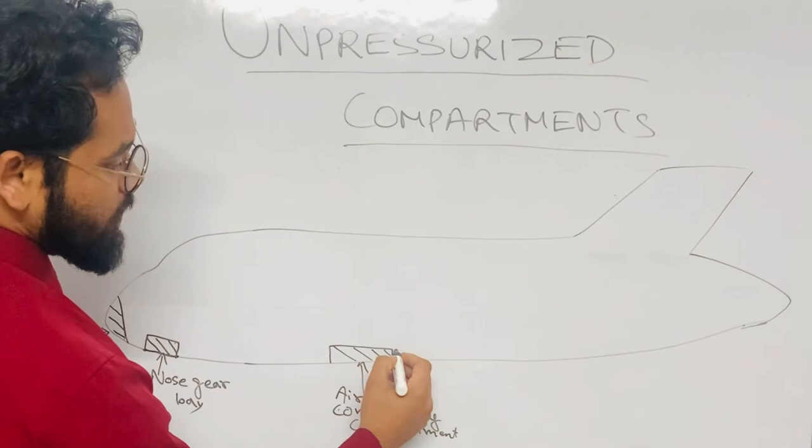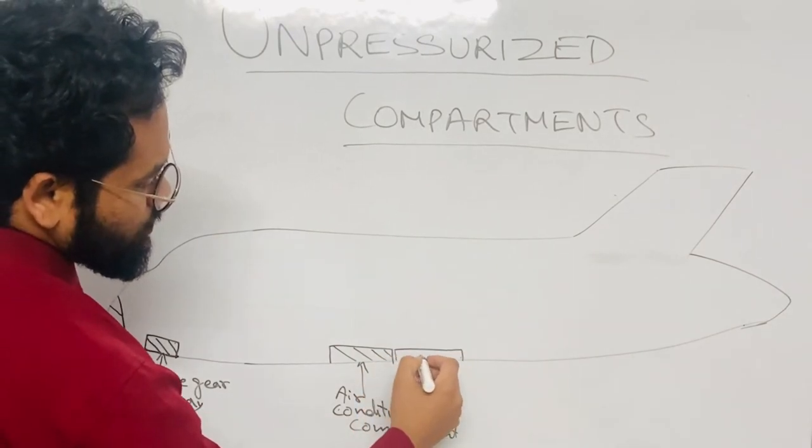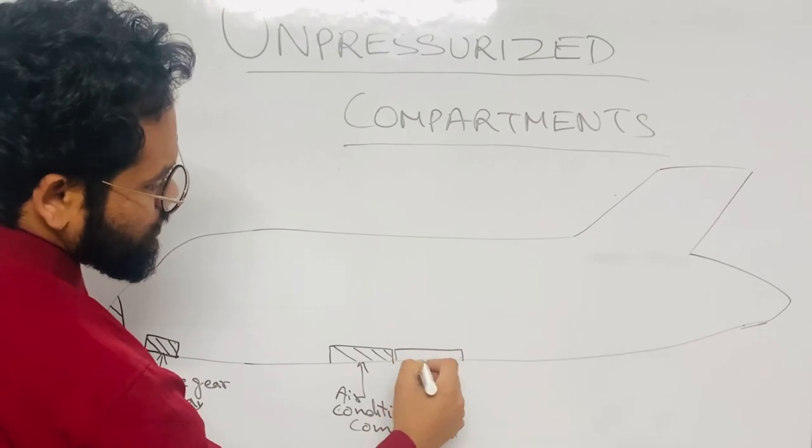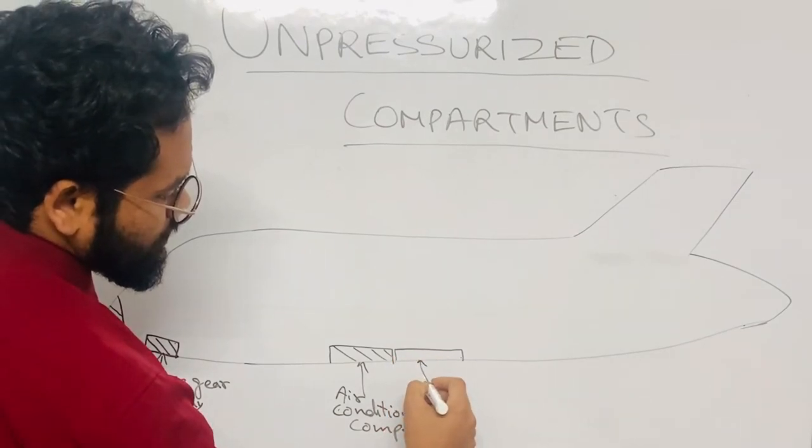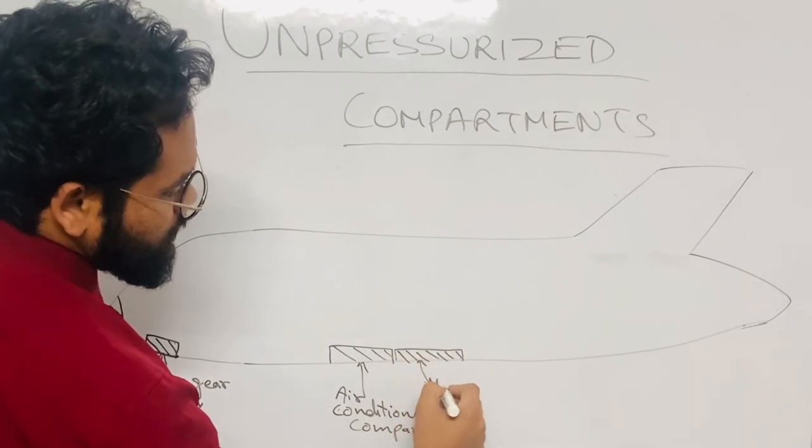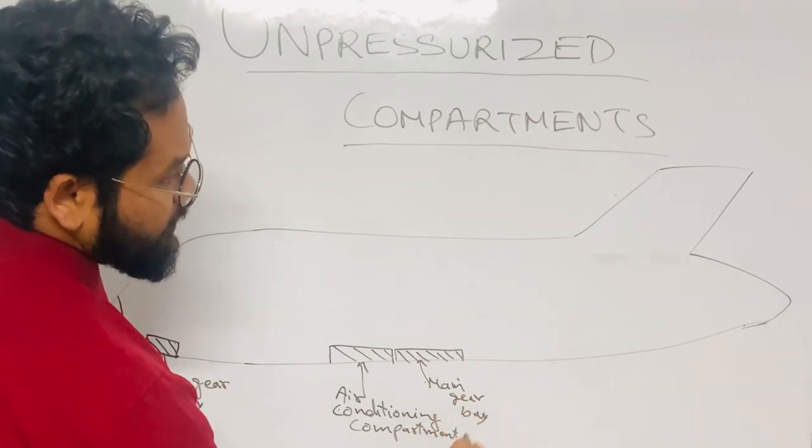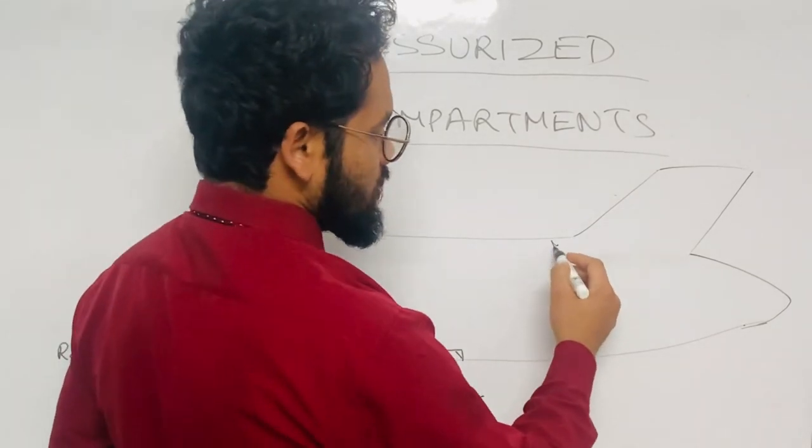Next, the other area which is unpressurized is the main gear bay. Okay, so the main gear bay is also unpressurized. This one, this one. This is the main gear bay.